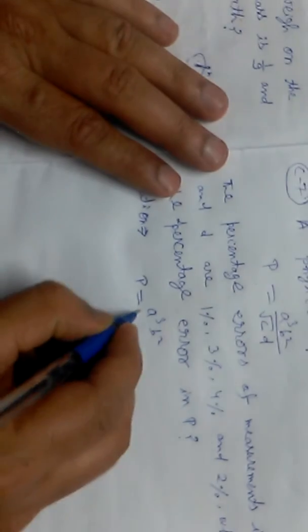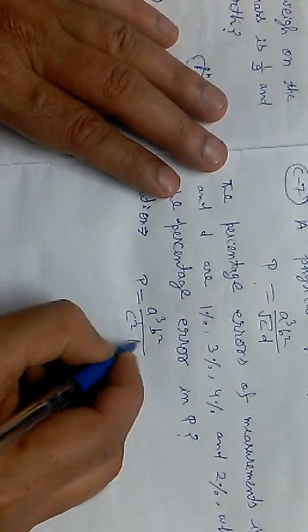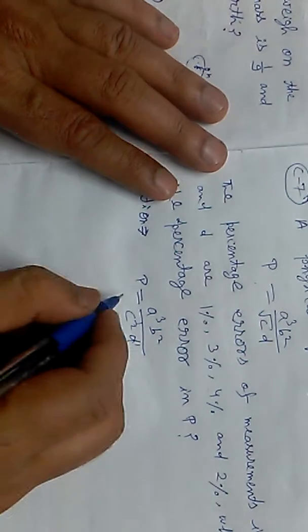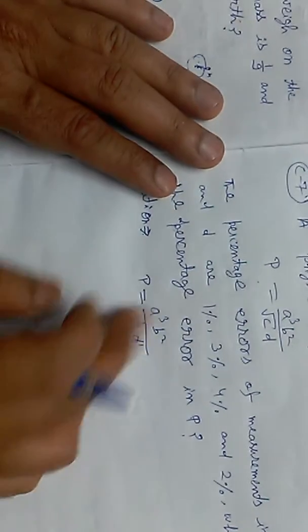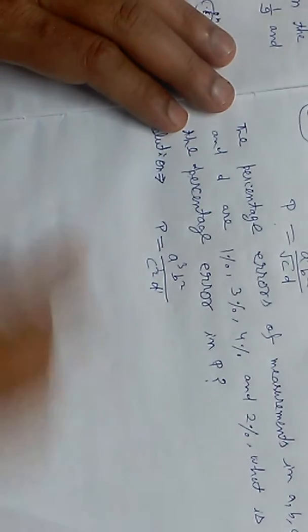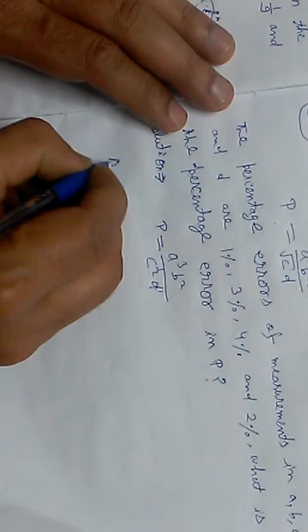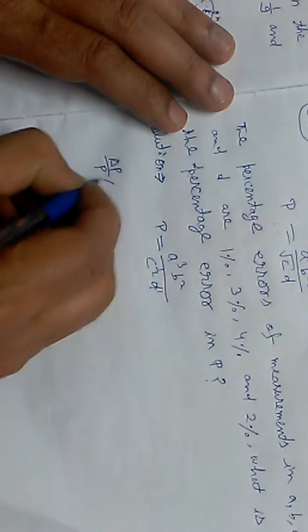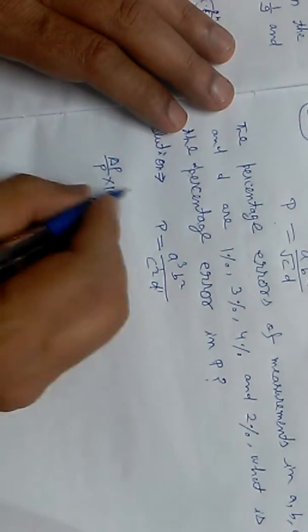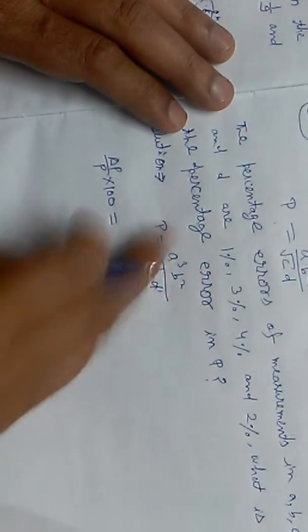The formula for error is delta P upon P times 100, which gives us the percentage error in P. This is the percentage error formula we will use.